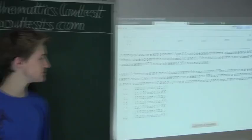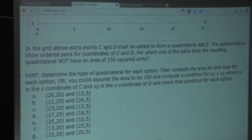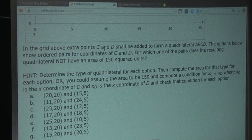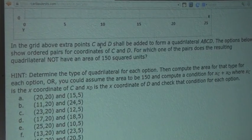So the question is, in the grid above, which we will see later, extra points C and D shall be added to form a quadrilateral A, B, C, D.